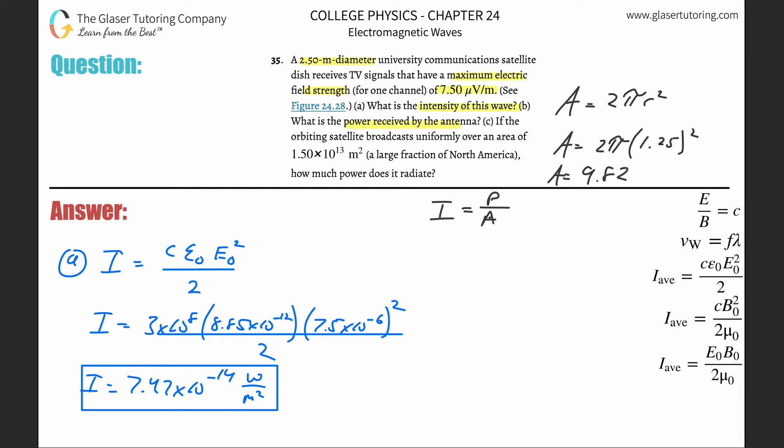We get a value of about 9.8. So now cross multiply these two terms and power is then going to equal the intensity multiplied by the area. The intensity we just solved for was 7.47 times 10 to the minus 14th, and the area here was 9.82. So just multiply them.